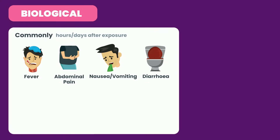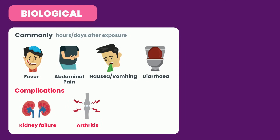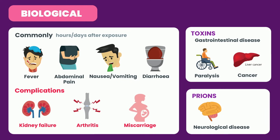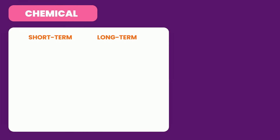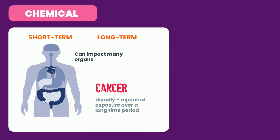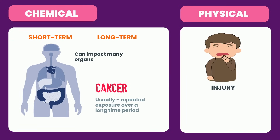There could be a range of complications such as kidney failure, arthritis, or miscarriage. Exposure to toxins not only causes gastrointestinal disease but can lead to a variety of health effects such as paralysis or cancer. Prions can lead to fatal neurological disease. Chemical compounds can cause short-term or long-term effects affecting almost any organ in the body, including different types of cancers — usually due to repeated exposure over a long period of time. Physical contaminants can cause injuries or serve as a way of introducing other types of contaminants.